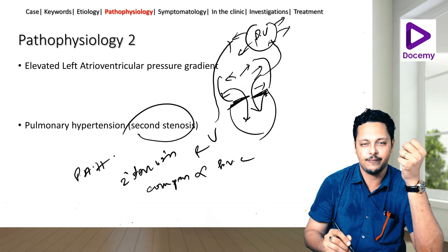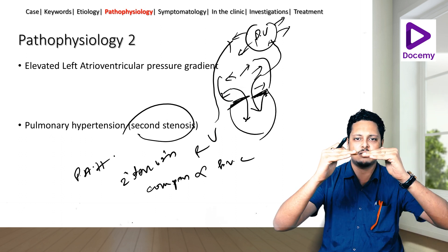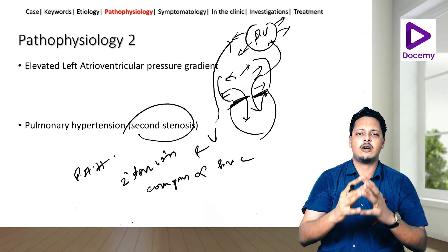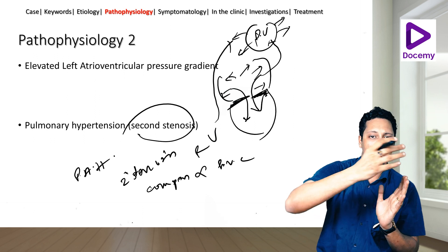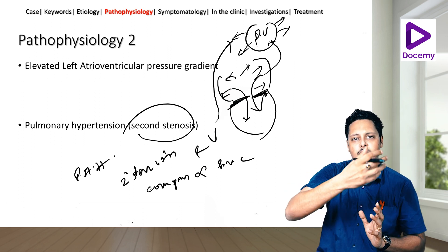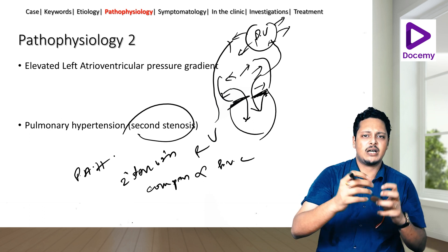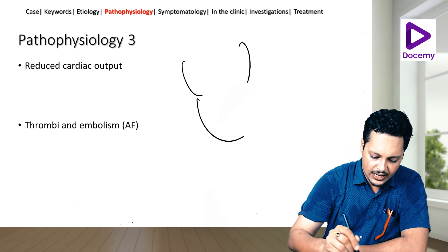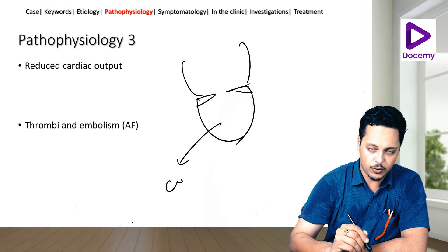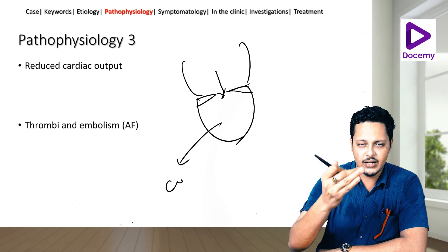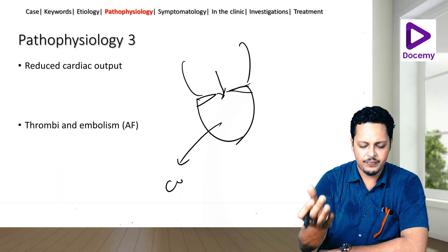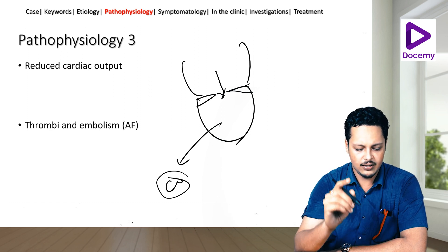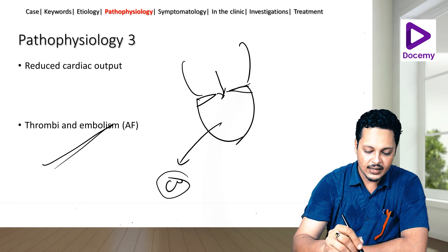To summarize: the LV cannot receive blood because of stenosis; the LA dilates and pressure increases; to relieve this, blood is retained in the pulmonary venous system, making the lungs wet. From the RV, blood flow is limited by pulmonary arterial hypertension as the pulmonary artery becomes thickened. Additionally, reduced cardiac output occurs because insufficient blood enters the LV, resulting in an ineffective cardiac output — which is why most patients are always tired and fatigued.